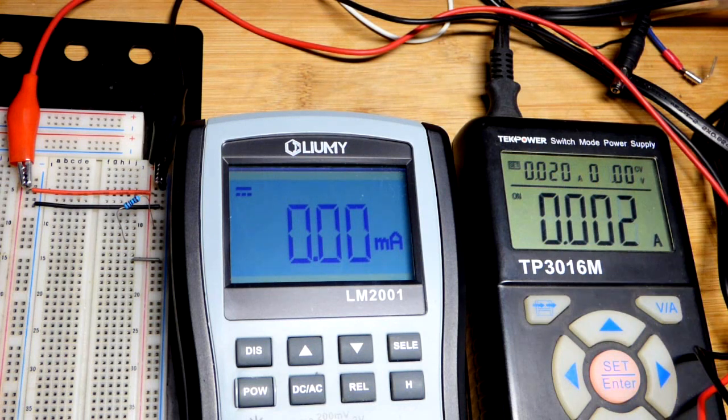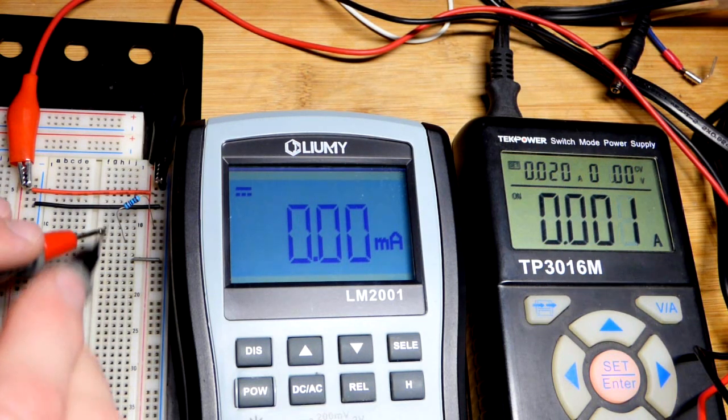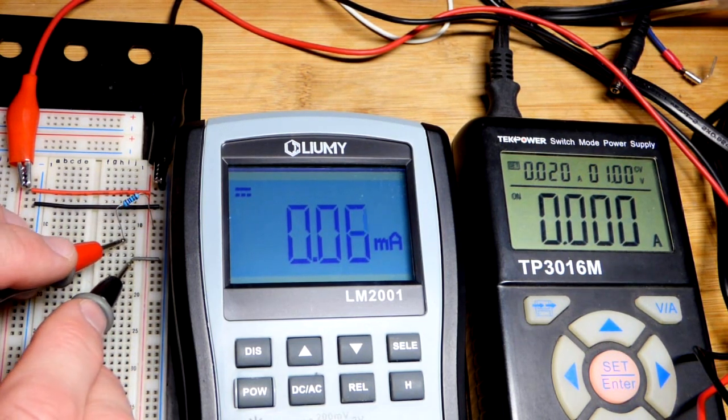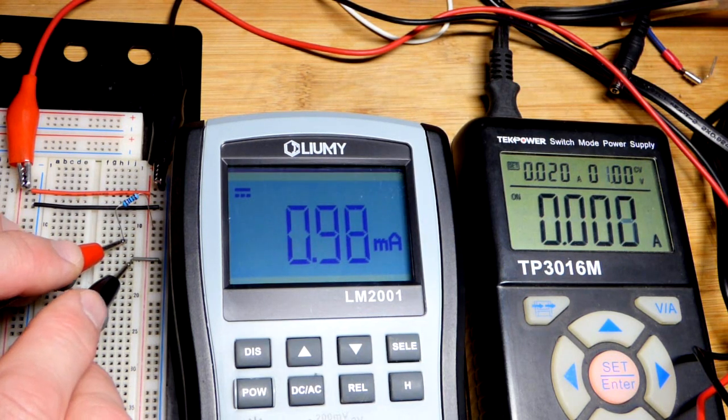Now we'll zoom back. You can see we only got one volt coming from the power supply. 1,000 ohm resistor. We expect about one milliamp of current, and there you can see that.